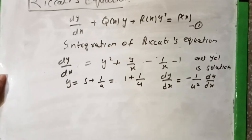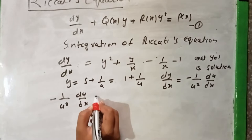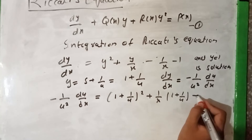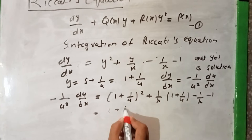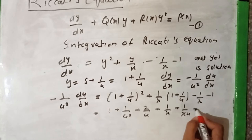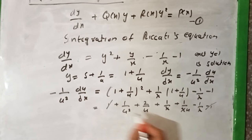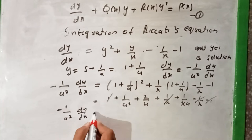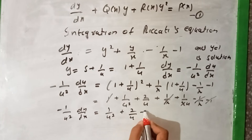Substituting into the equation, minus 1 over u² times du/dx equals (1 + 1/u)² plus (1/x)(1 + 1/u) minus 1/(x−1). Expanding: this gives 1 + 1/u² + 2/u + 1/x + 1/(xu) minus 1/(x−1). The constant terms 1 and 1/(x−1) and −1/(x−1) cancel, leaving minus 1 over u² times du/dx equal to 1/u² plus 2/u plus 1/(xu).